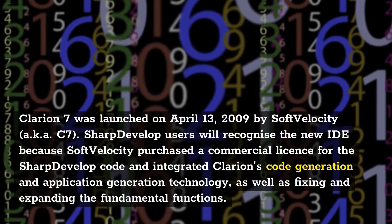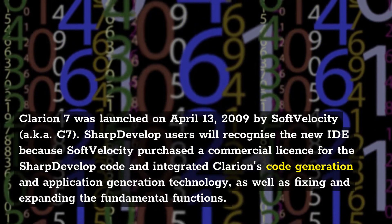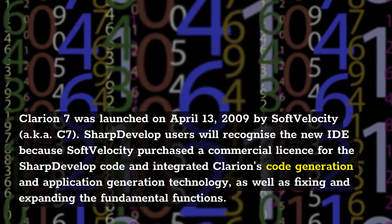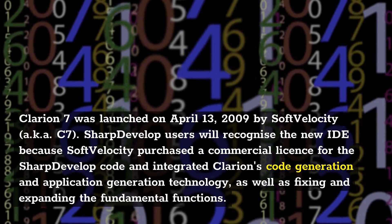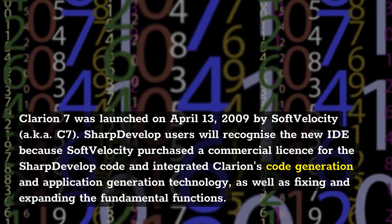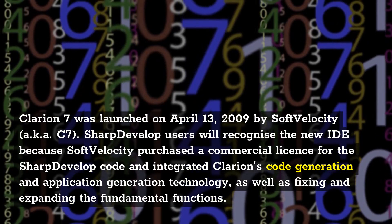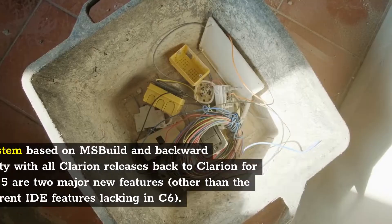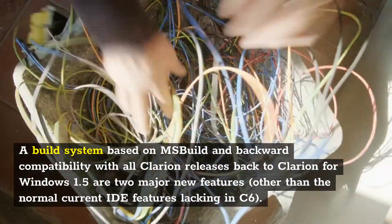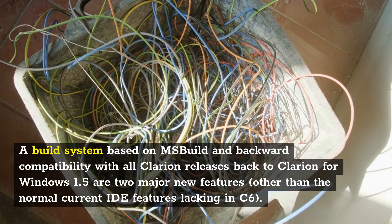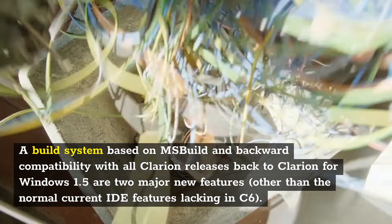Clarion 7 was launched on April 13, 2009 by SoftVelocity, also known as C7. SharpDevelop users will recognize the new IDE because SoftVelocity purchased a commercial license for the SharpDevelop code and integrated Clarion's code generation and application generation technology, as well as fixing and expanding the fundamental functions. A build system based on MSBuild and backward compatibility with all Clarion releases back to Clarion for Windows 1.5 are two major new features, in addition to the normal current IDE features lacking in C6.